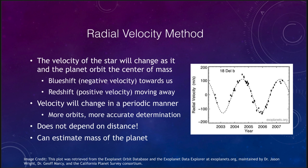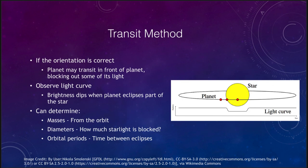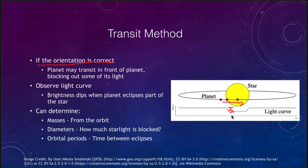The other common method used is called the transit method. The transit method works only if the orientation of the system is correct — meaning it has to be seen almost edge-on, so the planet passes in front of the star and will temporarily dim its light. If we look at what we call the light curve, we see the brightness of the star, and when the planet passes in front of it, it dims off a little bit of that light. When we observe this, we will see the planet eclipsing part of the star and we will see that light curve drop down in brightness. We can determine the mass of the planet from the orbit, and the diameters, size, and orbital periods.